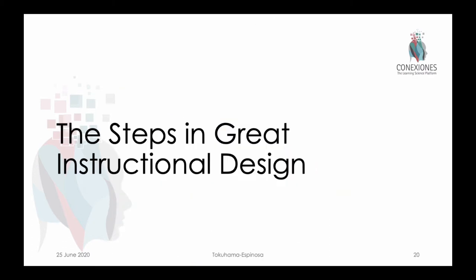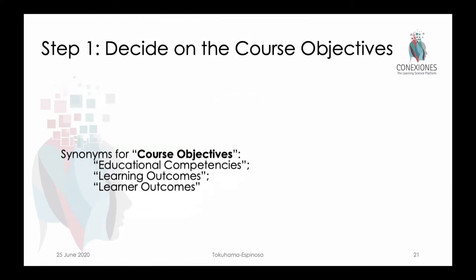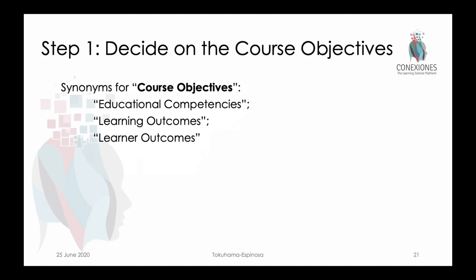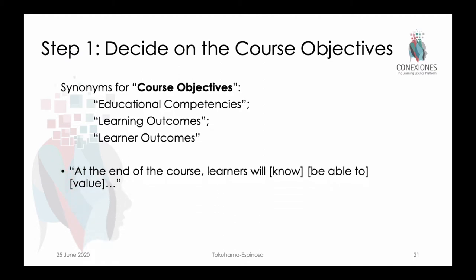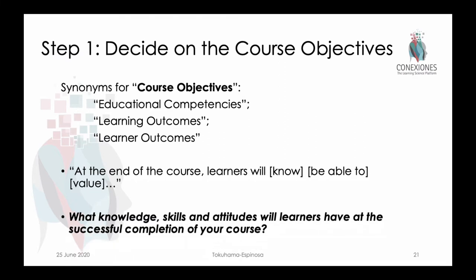So let's look at these 12 steps. First, we have to decide on the course objectives — some of you may call these educational competencies, learning outcomes, or learner outcomes. These are the things we set up in our syllabus by saying 'at the end of the course, learners will know, be able to do, or value.' This hovers around the big question: what knowledge, skills, and attitudes will learners have at the successful completion of your course? Keep that in mind as a north star as you plan those objectives.